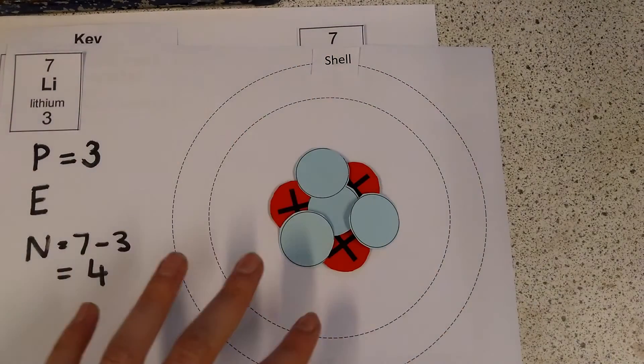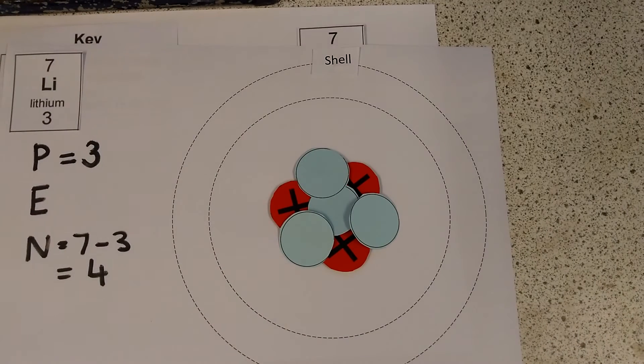then in this atom, in this uncharged particle, we need 3 negative things to balance them out. And the only negative things we have are electrons, so I'm going to have 3 of them as well.